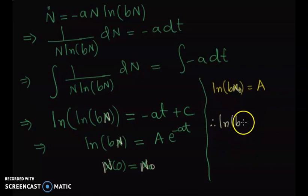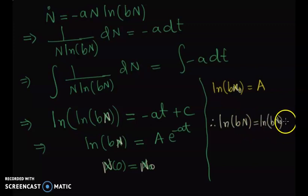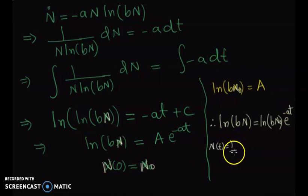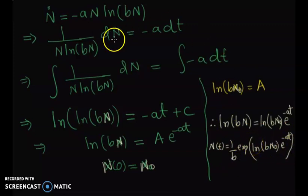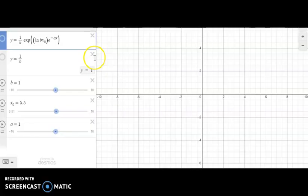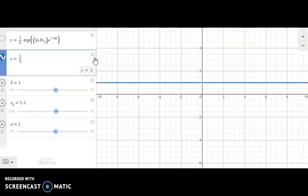Applying the initial condition n(0) equals n-naught, the solution becomes: natural log of b·n equals natural log of b·n-naught times e to the minus a·t. Therefore n(t) equals one over b times exponential of the natural log of b·n-naught times e to the minus a·t, where n-naught is the initial condition.